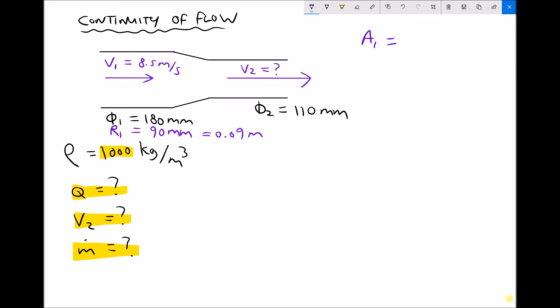Now we need to do the same for our outlet. We have a diameter of 110 millimeters which means we have a radius of 55 millimeters which is equivalent to a radius in meters of 0.055 meters. And all I've done there is divide by a thousand.